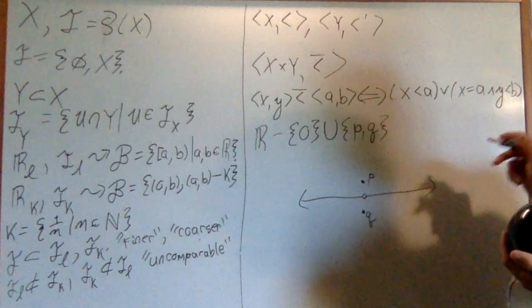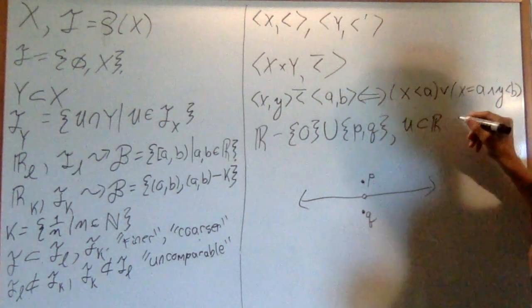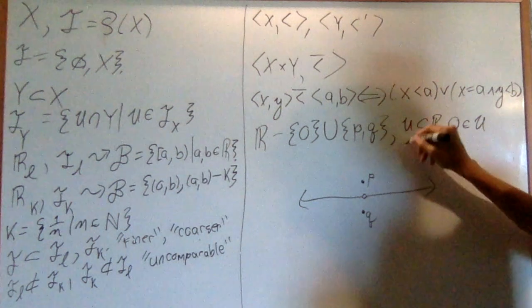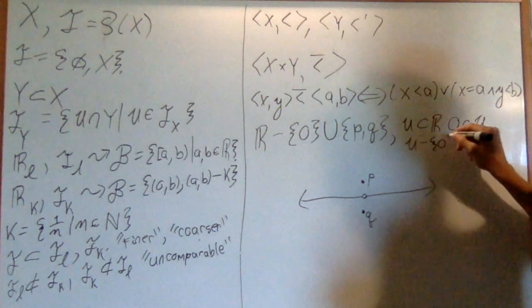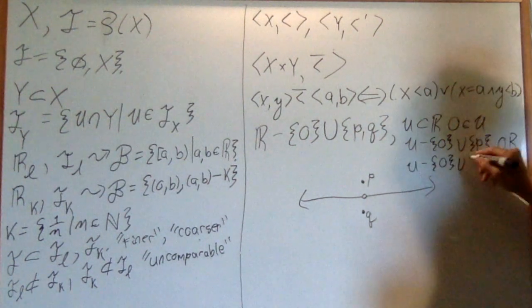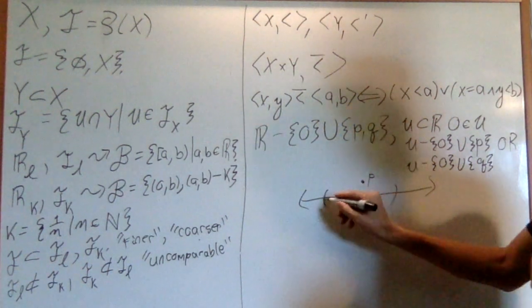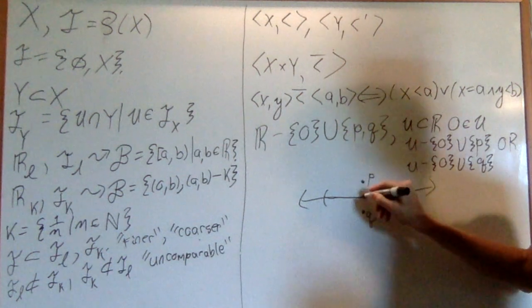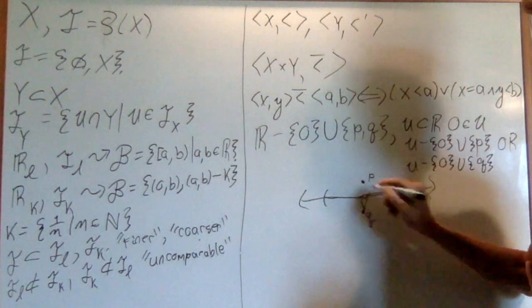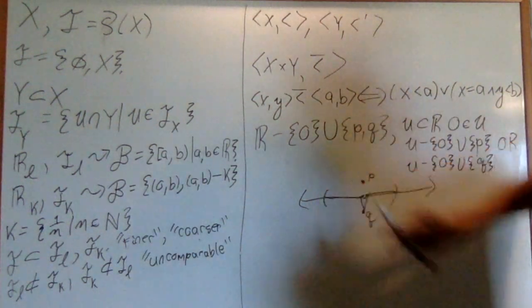Now we define a topology on this by just saying that if I have an open set U of R, and I have it that zero is an element of U, then instead of just leaving U like that, I'll just do U, remove zero, and then union either p or q, but not both. So when I have an open set, say this one, I have to decide when I reach zero, should I go up to p, and then keep going, or down to q. So I just replace zero with either p or q, and it's the line with two origins.